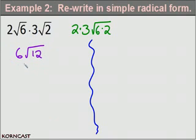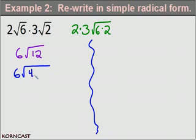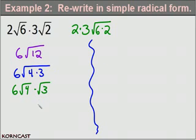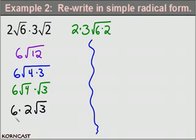Now we need to decide if we can simplify 6√12 further. Since 4 is the largest perfect square that factors out of 12, we can write 12 as 4×3. Using the product property, we get 6 × √4 × √3. The square root of 4 is 2, so we have 6 × 2 × √3. Multiplying 6×2 gives 12, so the final answer is 12√3.